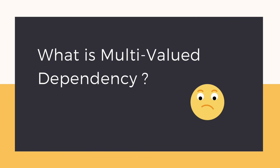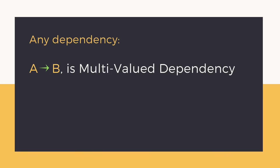So let's see what multi-valued dependency is. A dependency A derives B is said to be multi-valued dependency if, for a single value of A, more than one value of B exists in a table.